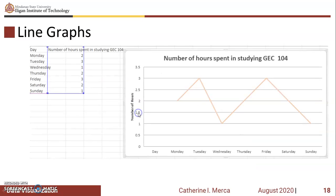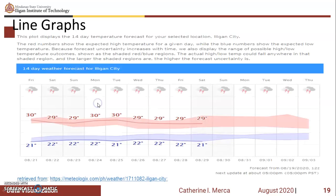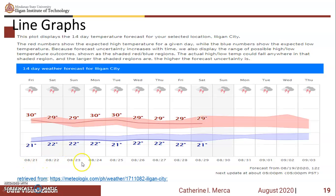This is an example of a line chart made using Excel. This is also a time series graph because on the x-axis are the dates when the temperature for Iligan City was taken, and we actually have a forecast shown here as well.